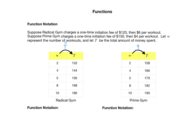Now that we've got the names, here is our notation. We write the name of the relationship — whenever I reference F, that means Radical Gym — and in parentheses next to F, we put the number of workouts, and set that equal to the total dollars spent. So instead of just an ordered pair W, T, we write this expression instead. This is not read as F times W — it has nothing to do with multiplication. This is read as F of W. So we say F of W equals T. Let's do the same for Prime Gym: G of W equals T, and again, this has nothing to do with multiplication.